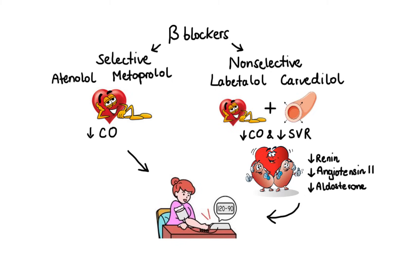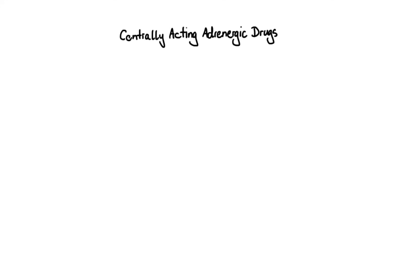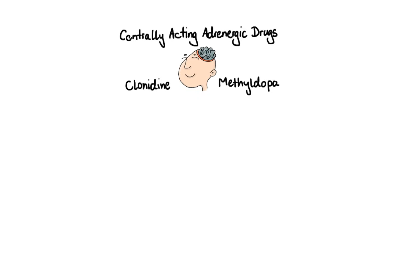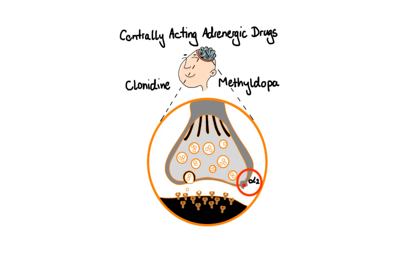Now the next major class of antihypertensive agents are centrally acting adrenergic drugs, which work by blocking sympathetic activity within the brain. Examples of drugs that belong to this class are clonidine and methyldopa. Clonidine selectively stimulates presynaptic alpha-2 receptors, thus providing negative feedback to reduce catecholamine production and release, leading to decrease in systemic vascular resistance and cardiac output.